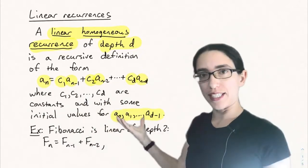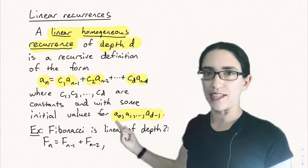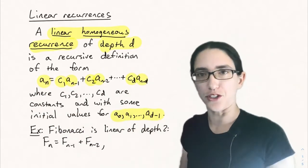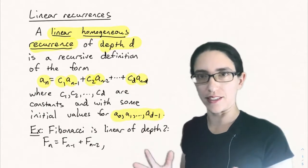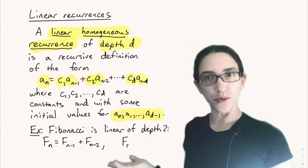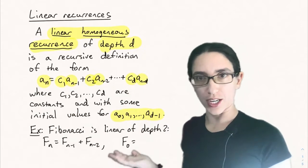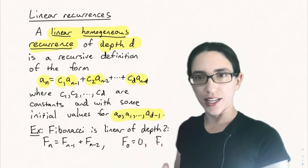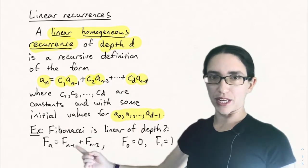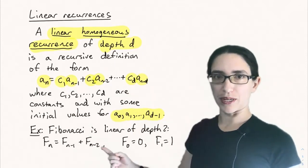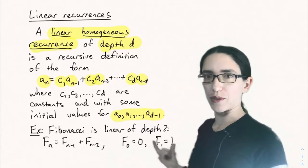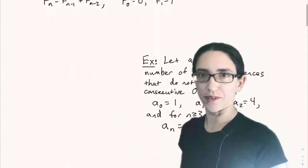For a depth d sequence, you need d initial values — a_0, a_1, up to a_{d-1} — given to you to determine a unique sequence. As an example, the Fibonacci sequence is a linear sequence of depth 2: f_n equals f_{n-1} plus f_{n-2}, and the two initial conditions are f_0 equals 0 and f_1 equals 1.